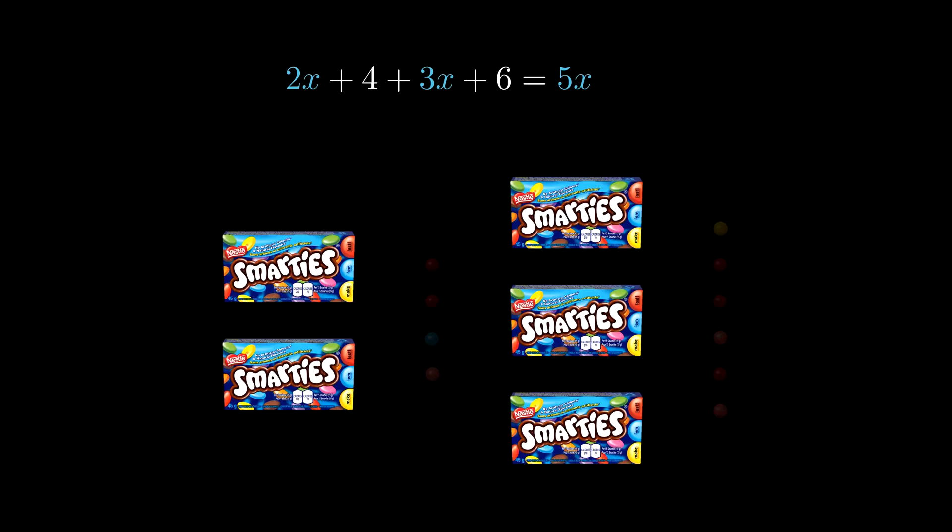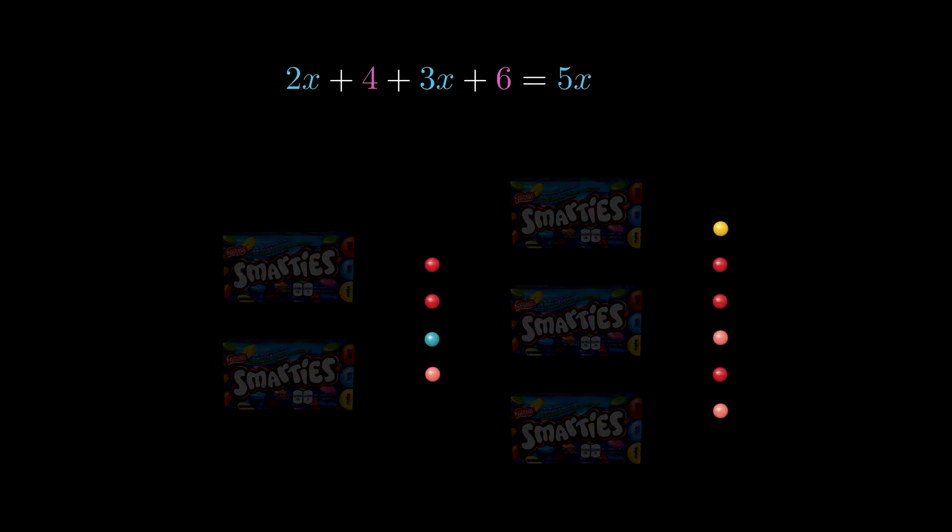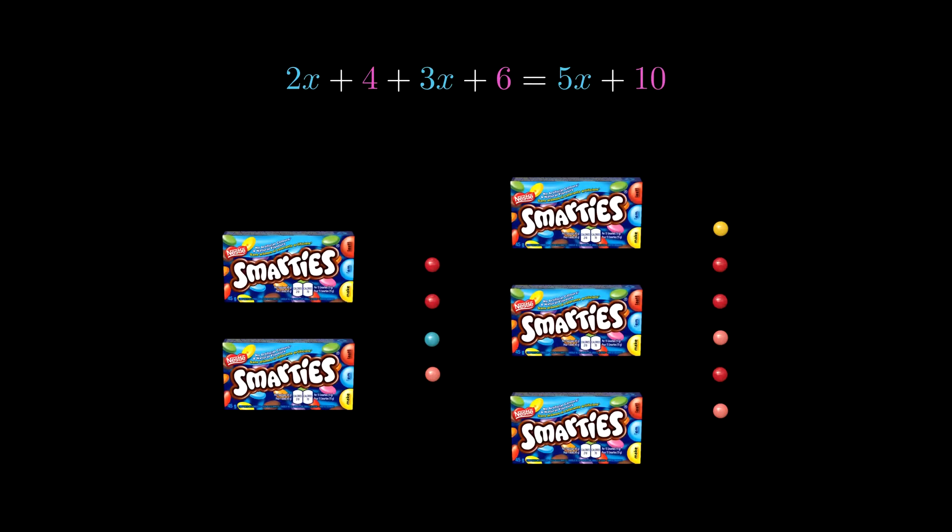Then we just count up how many extra smarties we have on the side. I've got four of them on the left, and six of them on the right. So altogether, 4 plus 6 gives us 10 extra smarties in total. So that's going to be a plus 10 at the end. Now at this point, we're finished. We're done. That's the best way to describe the picture we see in front of us.